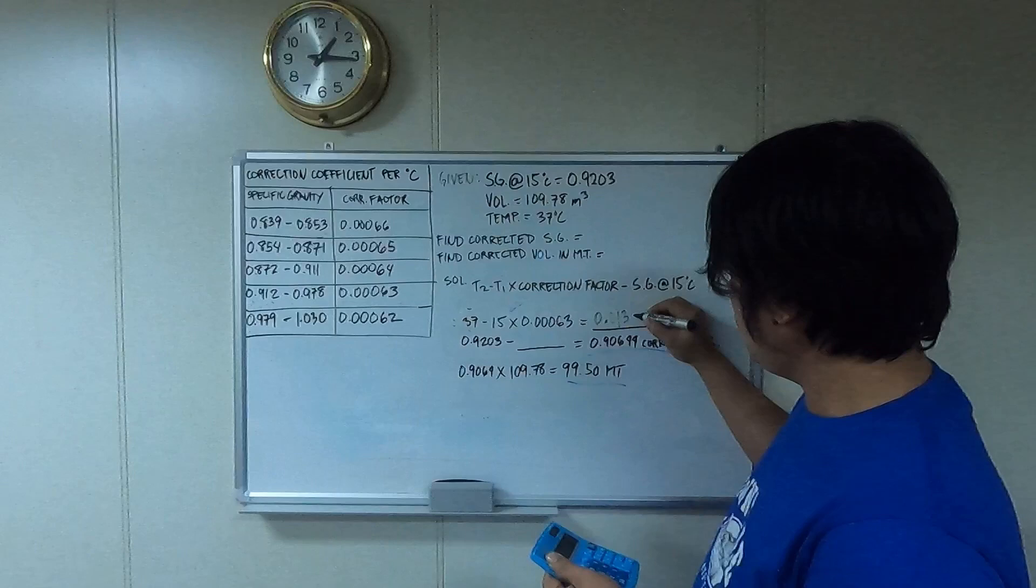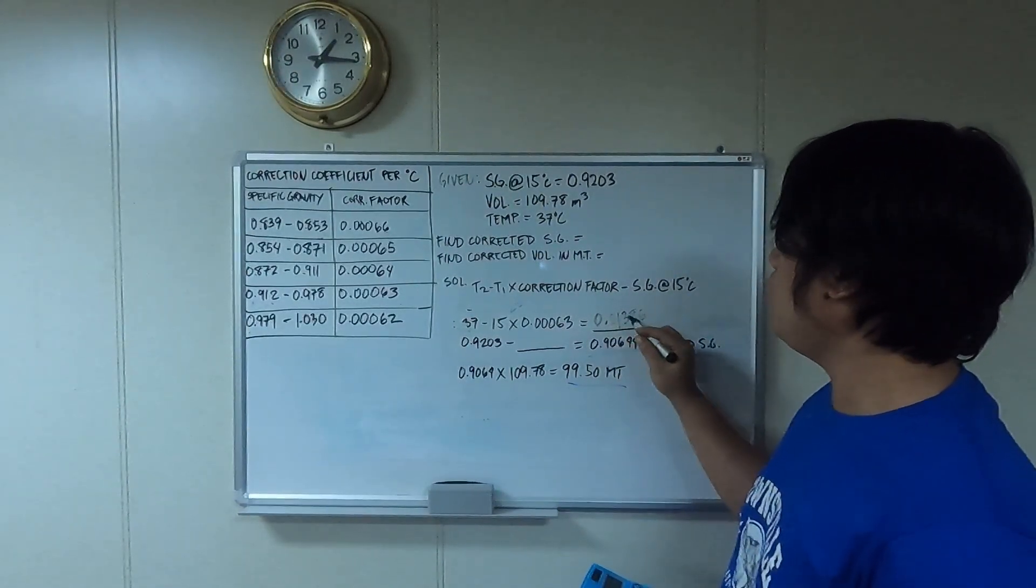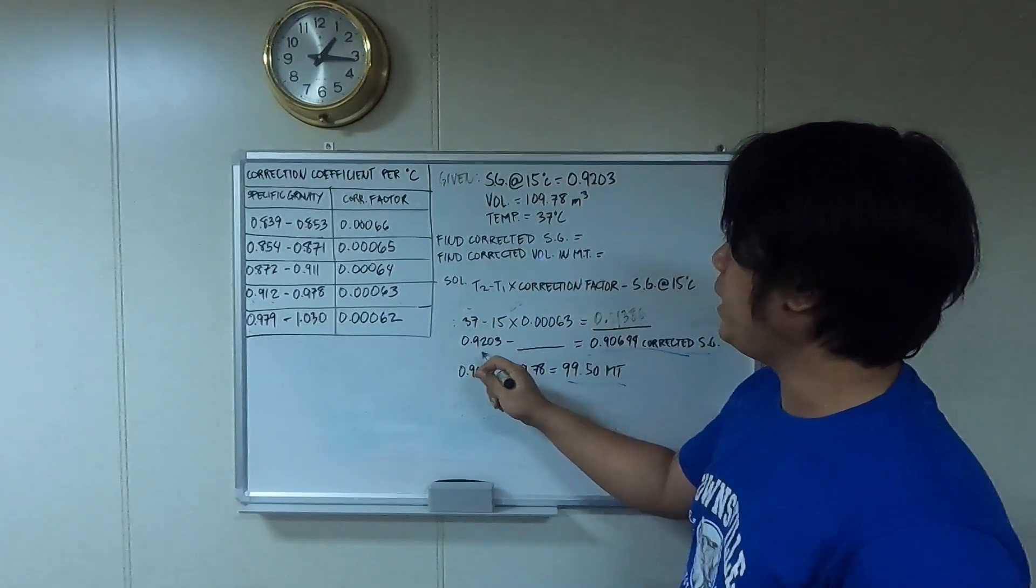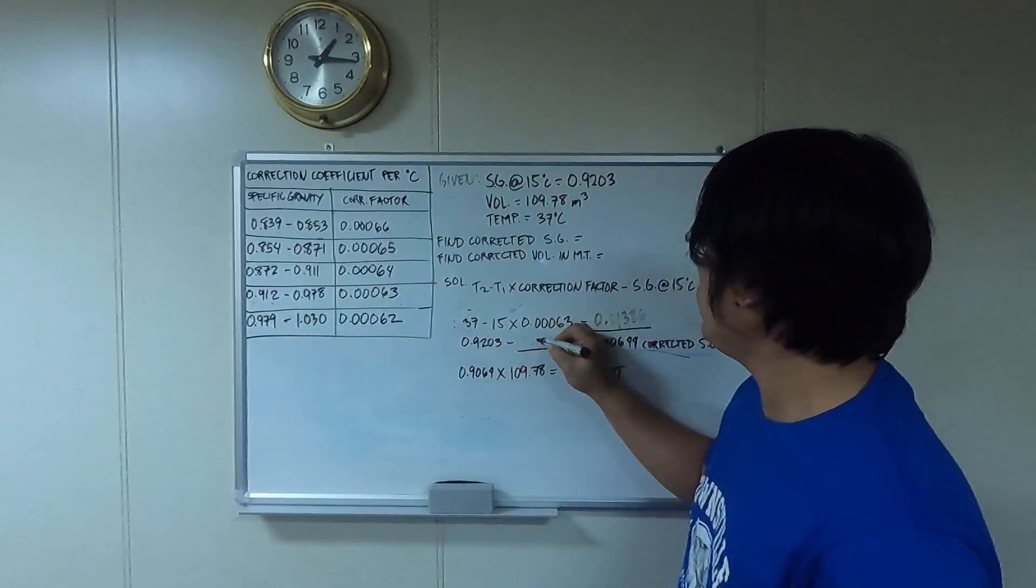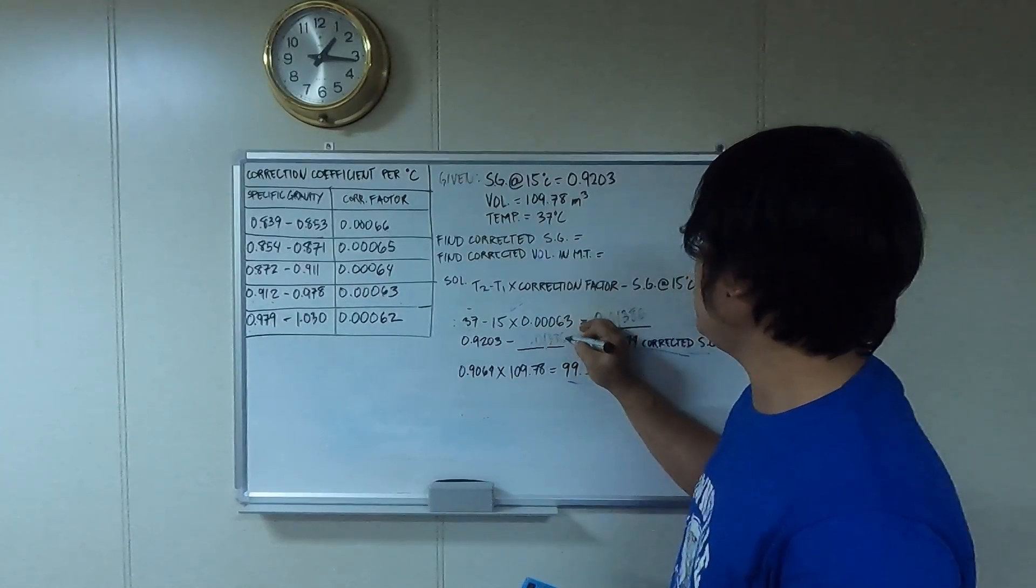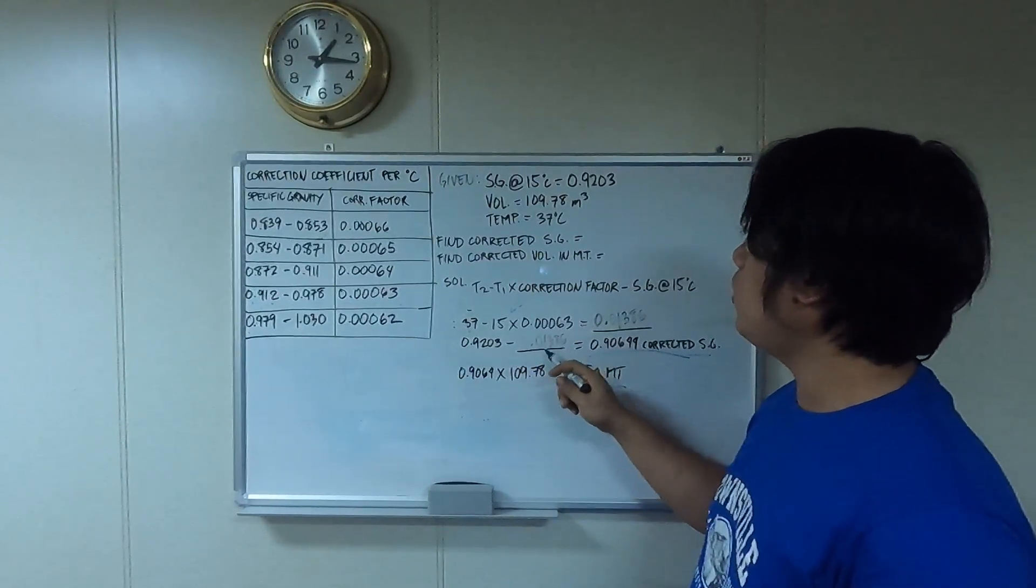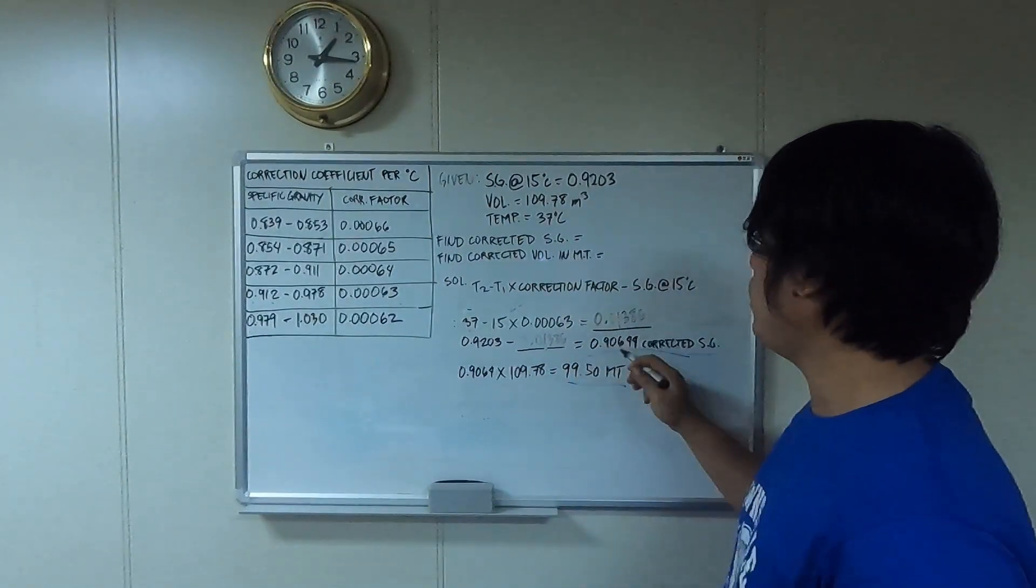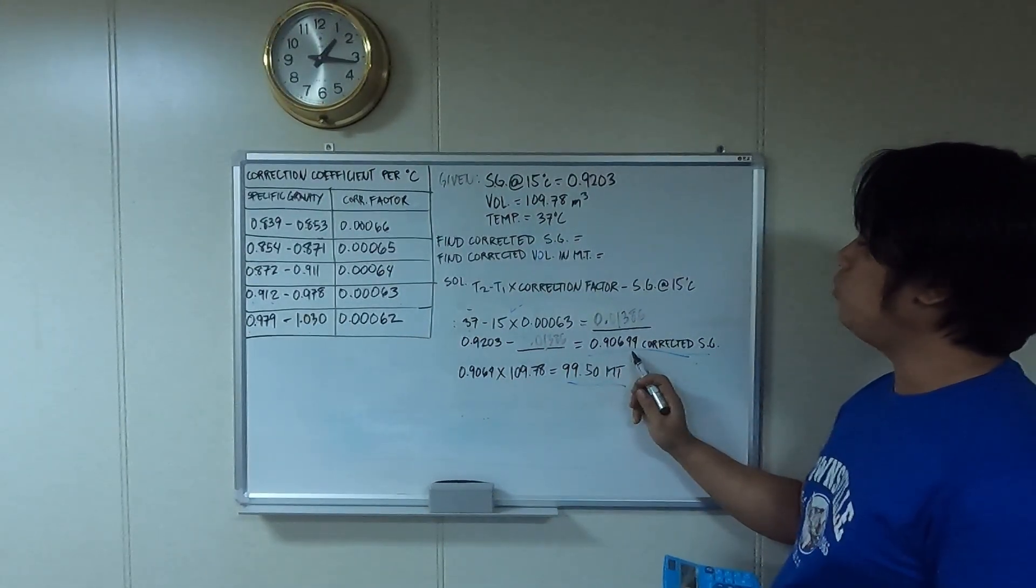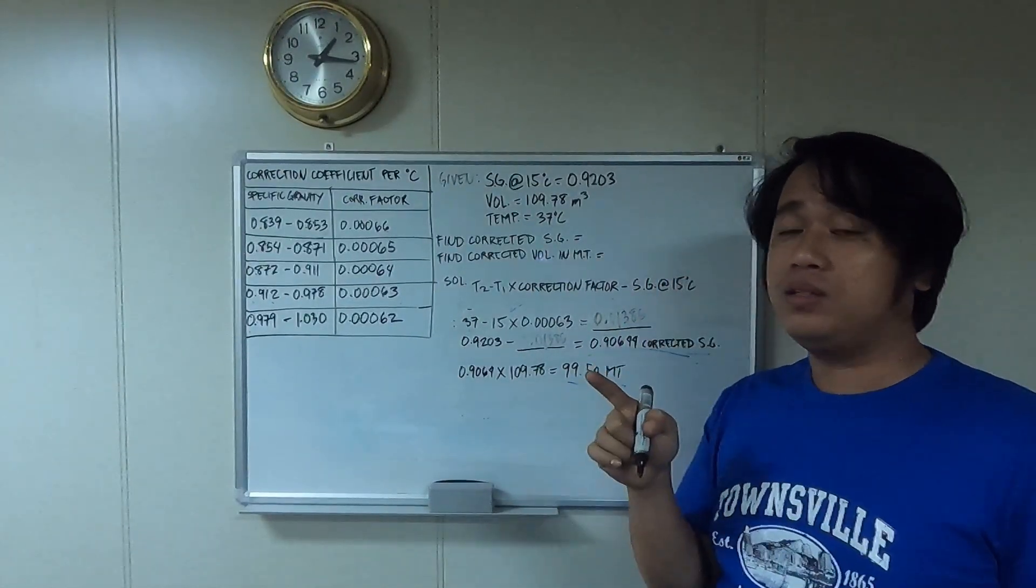22 times 0.00063 equals 0.01386. So you're going to minus it here: 0.9203 minus 0.01386.